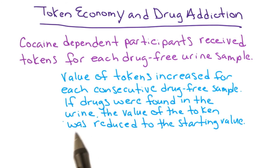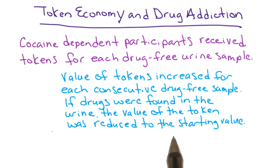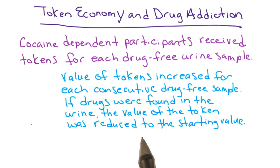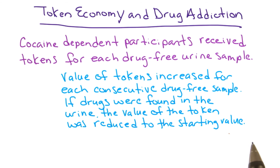If drugs were found in the urine, the value of the token decreased back to the original starting value. So consecutive drug-free samples increased the token value each time, but a positive test reset it. In these studies, the researchers found a significant decrease in drug use, especially compared to other therapies such as Narcotics Anonymous. These individuals spent longer time drug-free than individuals in those other treatments.